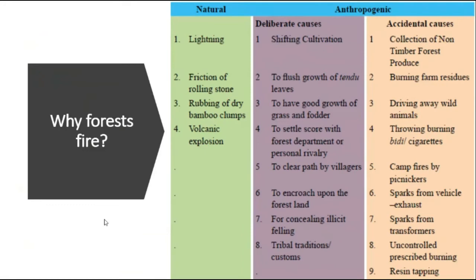Now we discuss the various causes of forest fire, divided into natural and anthropogenic causes. Natural causes include lightning, which can create forest fire on the crowns of trees, and friction from rolling stones, rubbing of dry bamboo clumps, and tree branches rubbing in the wind creating friction that leads to forest fires. Forest fires from natural reasons account for only 5%, while 95% of forest fires happen because of anthropogenic causes.